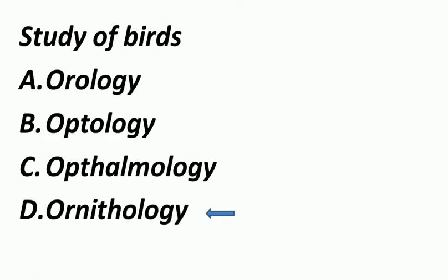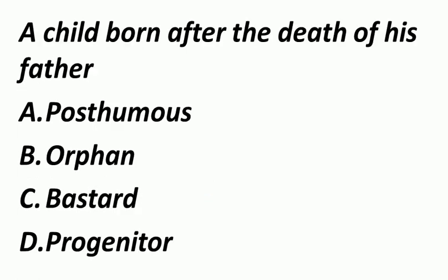A child born after the death of his father — इसको ऐसे भी पूछा जा सकता है: a book published after its writer's death. तो इसको हम बोलते हैं Posthumous. Orphan मतलब a child whose parents are dead. Bastard आपको पता ही है. Progenitor मतलब पूर्वज — जिससे वो originate हुआ है, ancestors.